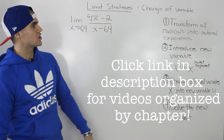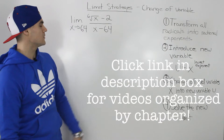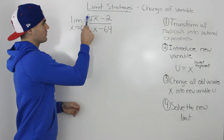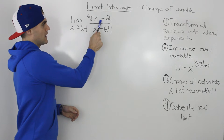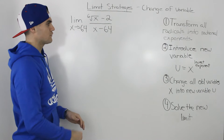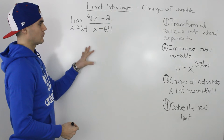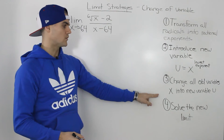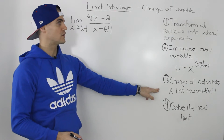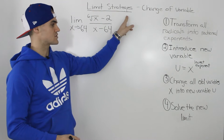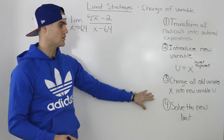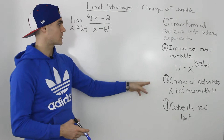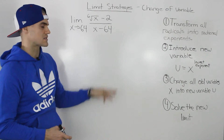Moving on to the next example for the change of variable strategy for solving limits. We have the limit as x approaches 64 of the sixth root of x minus 2, all over x minus 64. I'm going to solve this limit using the four steps from the overview video. If you haven't watched that overview video, make sure you do so, as I go over those steps in a lot more detail.